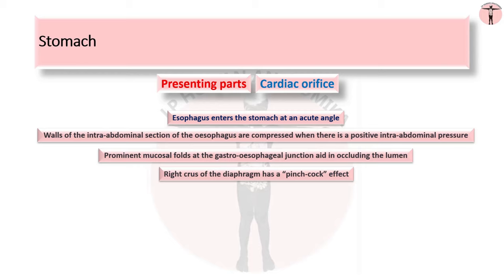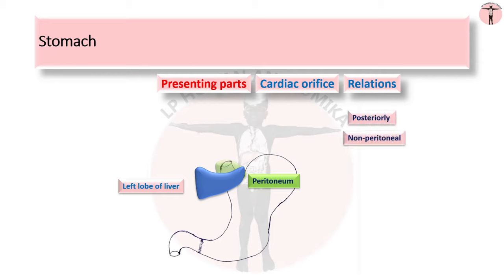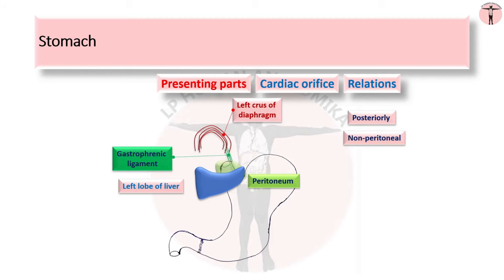During esophageal peristalsis, the sphincter relaxes to allow food to enter the stomach; at rest, its function is to prevent reflux of acid gastric contents into the esophagus. Anteriorly, the cardiac orifice is covered by peritoneum and overlapped by the left lobe of liver. Posteriorly, it is non-peritoneal over a triangular bare area, connected with the left crus of the diaphragm by the gastrophrenic ligament. Sometimes part of the left suprarenal gland intervenes between the cardiac orifice and left crus.